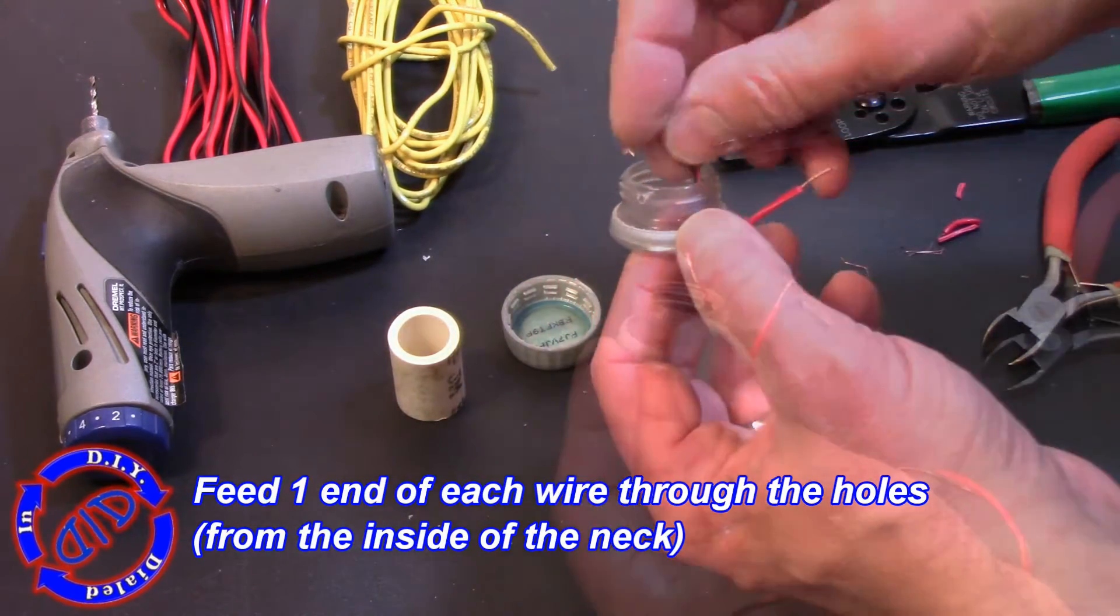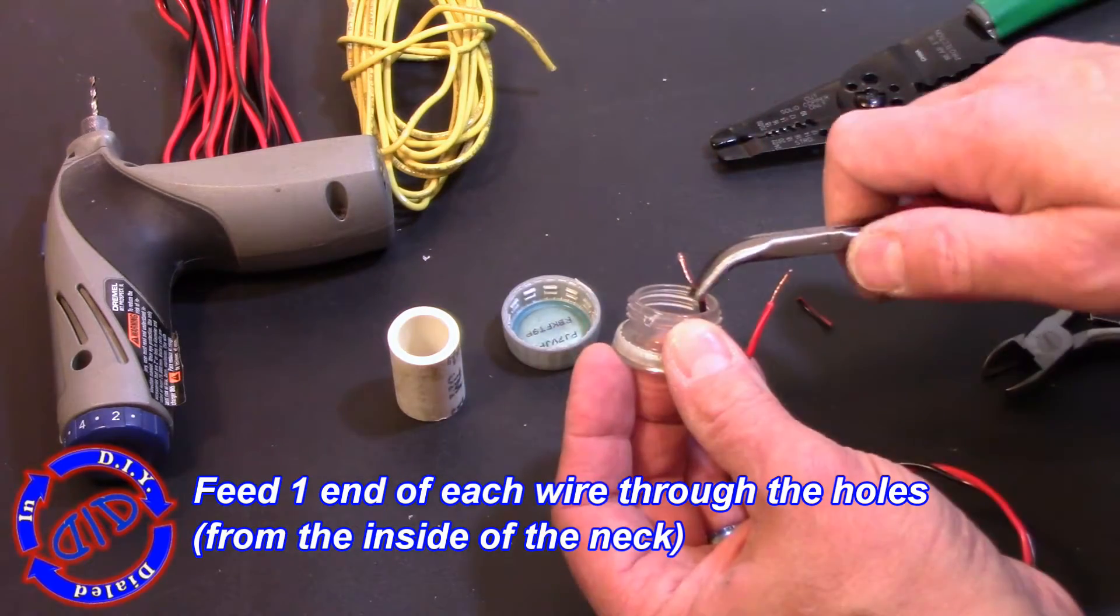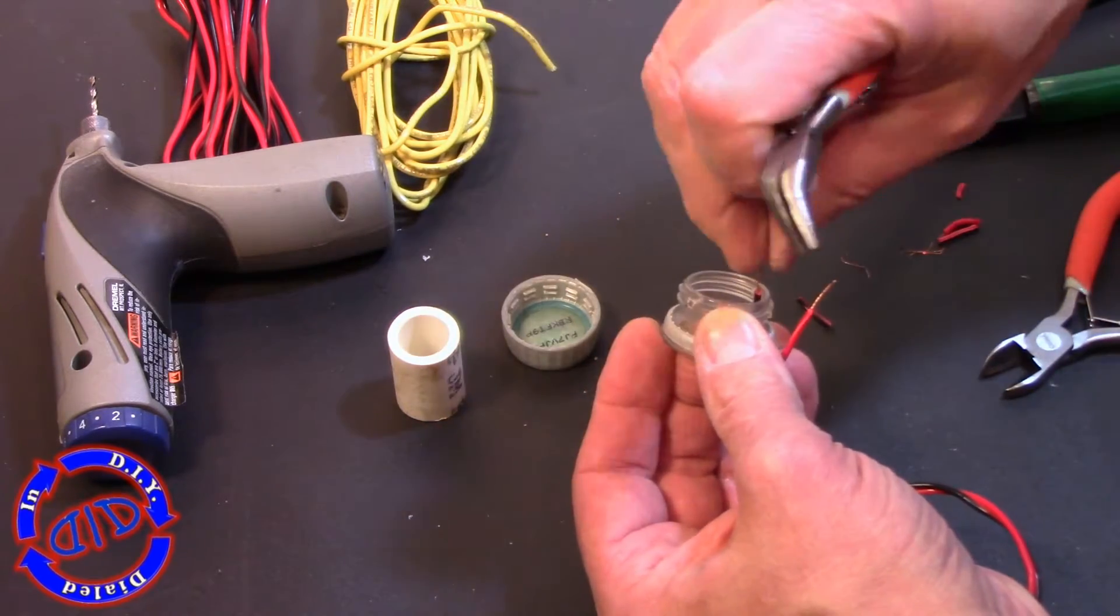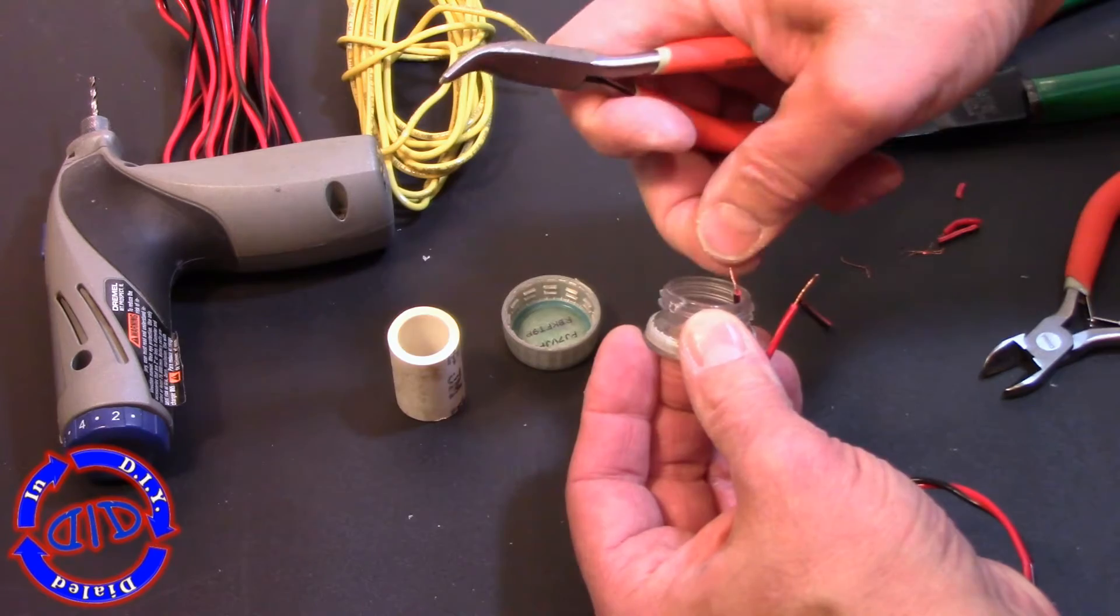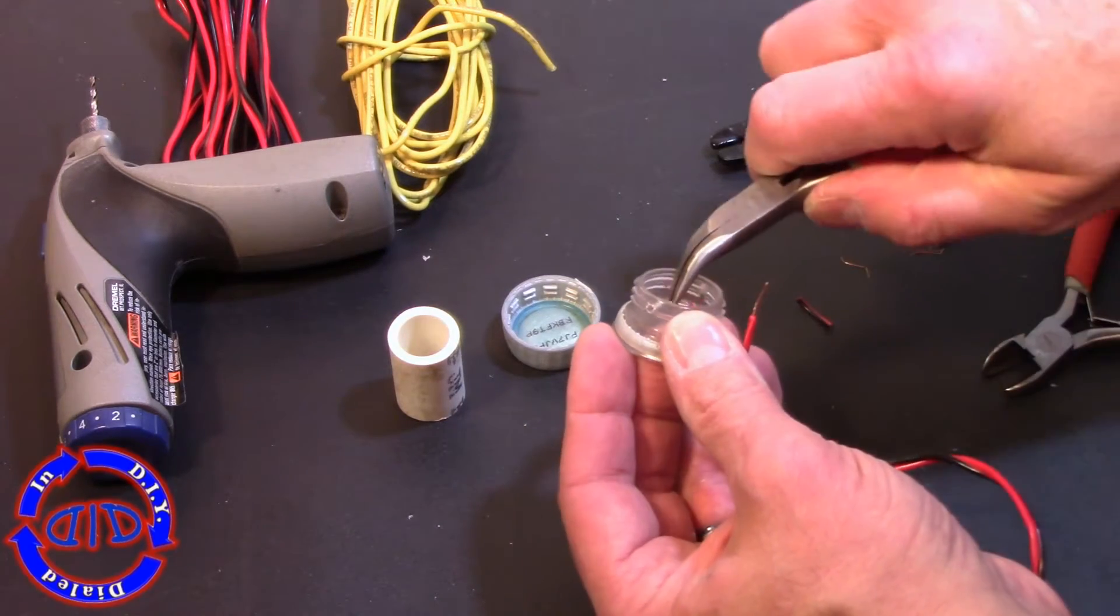Now what you want to do is bring the wire up and through the inside of the cap assembly itself and twist the wire down so that it's nice and compact and fit it through one of the holes.